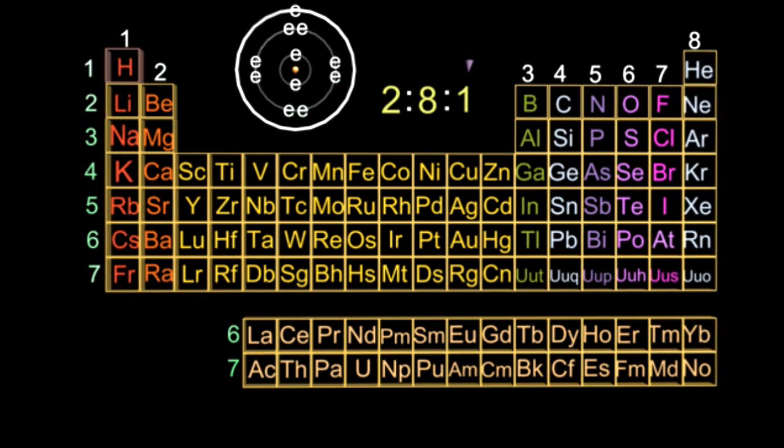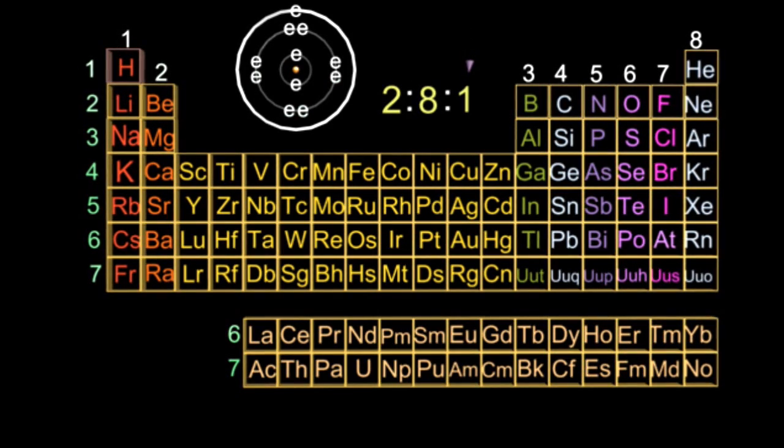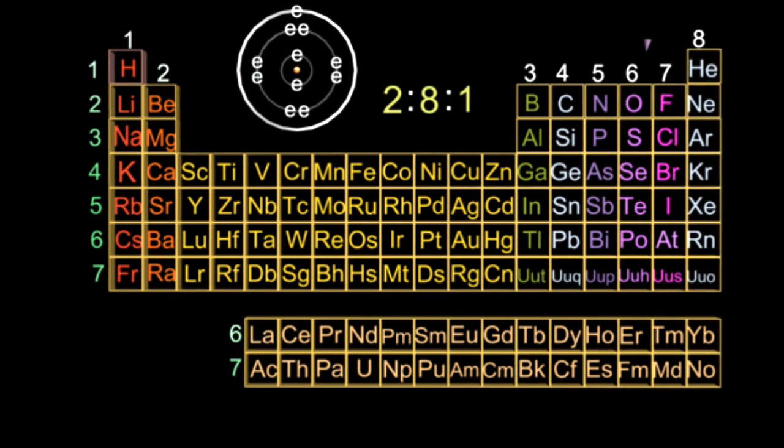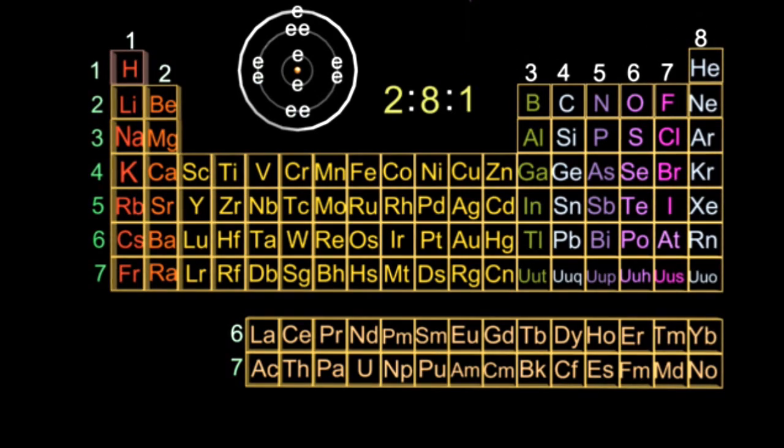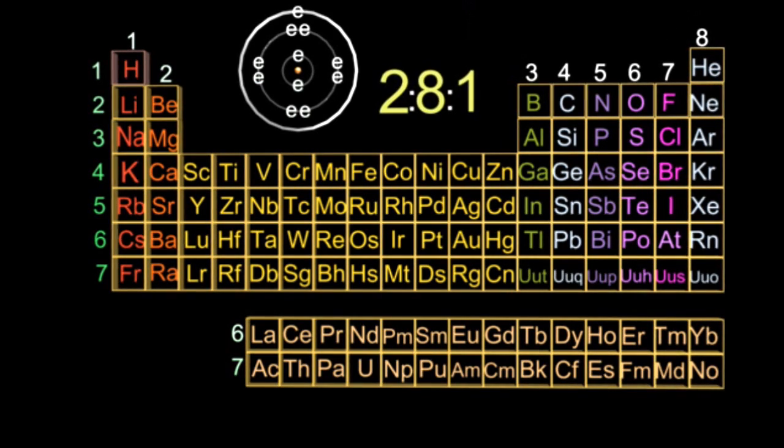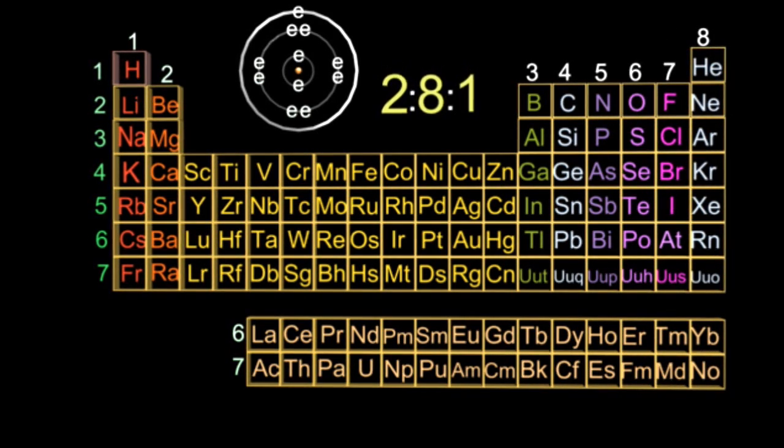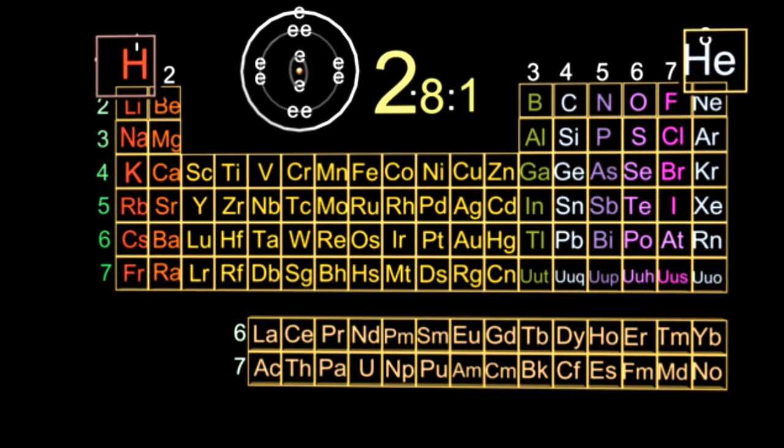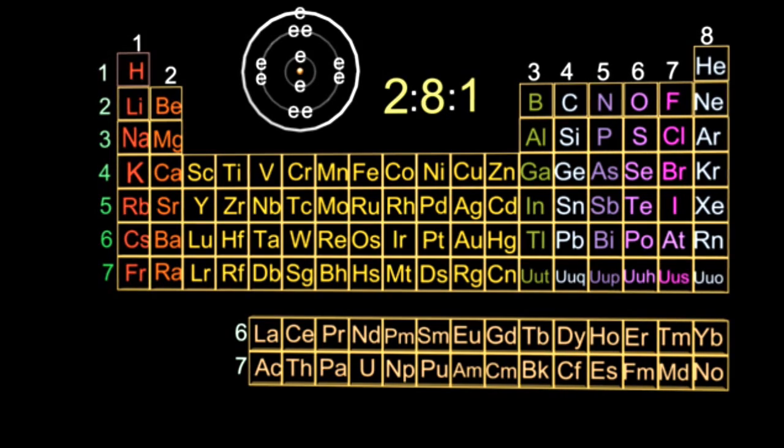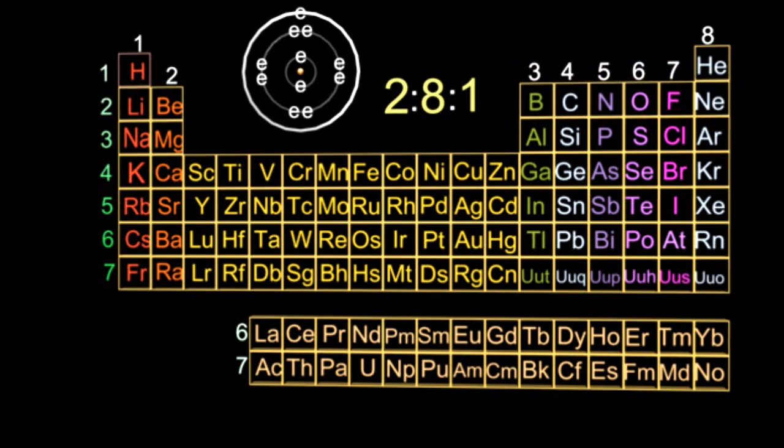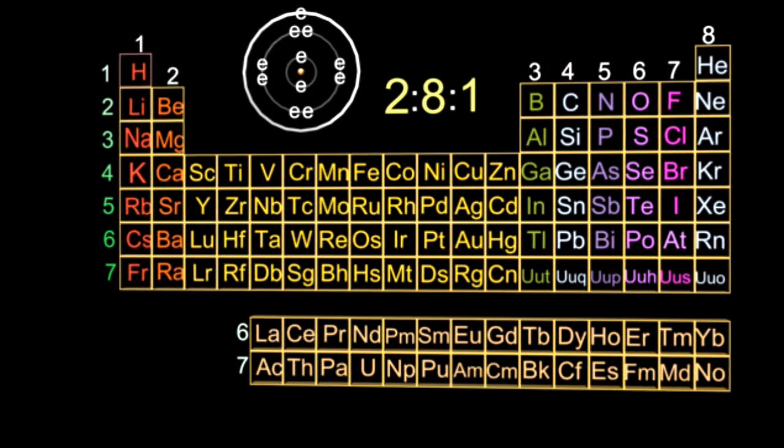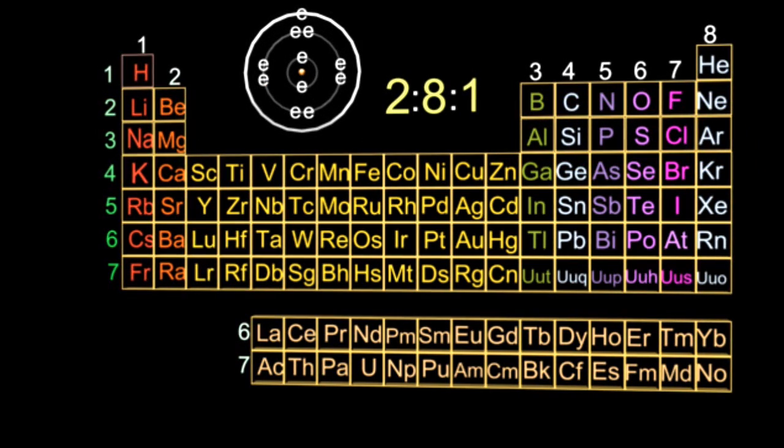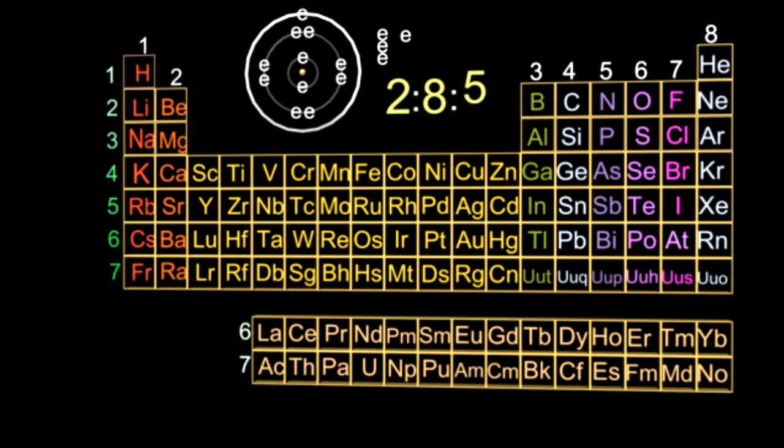Maybe you've noticed that the final term in the electron arrangement is equal to the group number. Sodium's in group one, and the final term must be one. And there are also three numbers in the electronic arrangement because there are three shells. The first number refers to period one, shell one. Second number to period two, shell two. And the third number to period three, shell three. So the number of numbers gives you the period that you will find the element in.